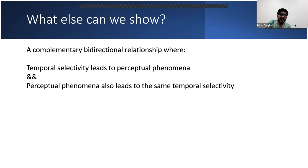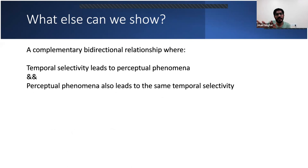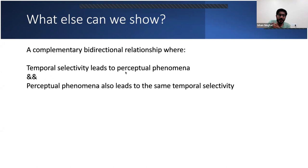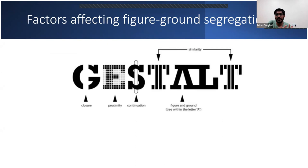I'll now briefly go over the second study, which is currently still being done — so this is preliminary data. What we asked was: what else can we do with the temporal mirroring account? We wanted to show that a temporal independent variable — specifically flicker — can lead to some perceptual effect, and that the same perceptual effect then affects time as a dependent variable. We used figure-ground segregation, asking whether we can induce it based on flicker frequency, and whether viewing a region as figure versus ground changes temporal sensitivity.